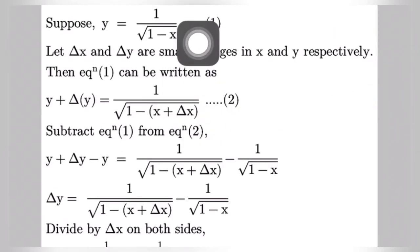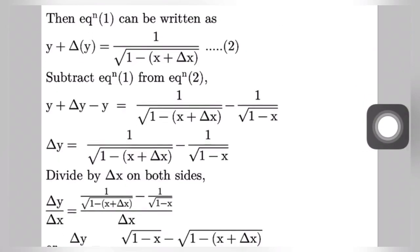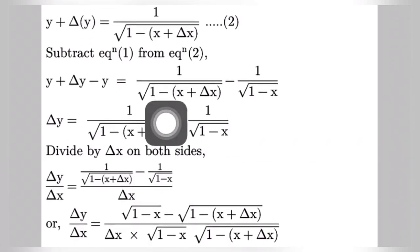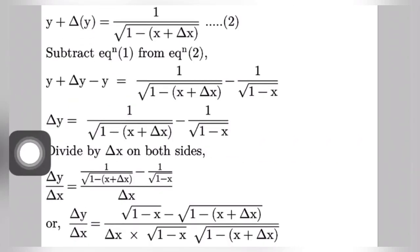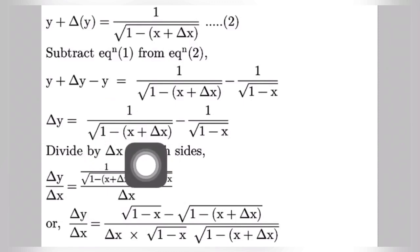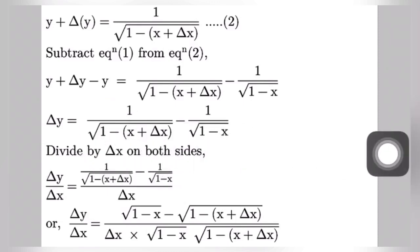Then we subtract equation 1 from equation 2. After subtracting we get y plus del y minus y is equal to 1 by root under 1 minus x plus del x, minus 1 by root under 1 minus x. The y cancels out, and we are left with del y is equal to 1 by root under 1 minus x plus del x, minus 1 by root under 1 minus x.